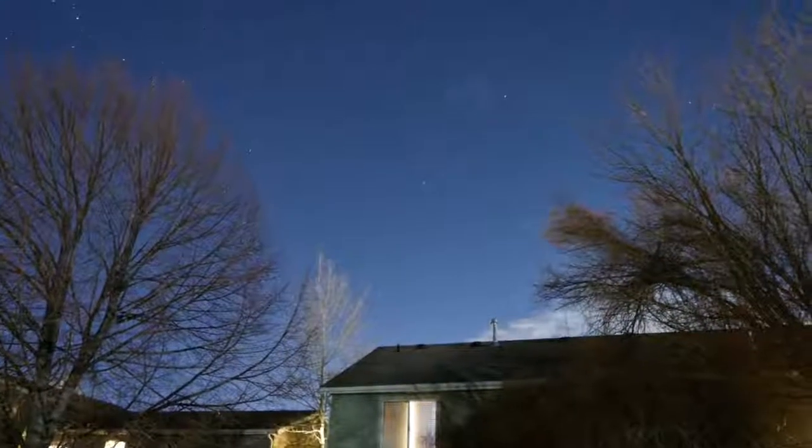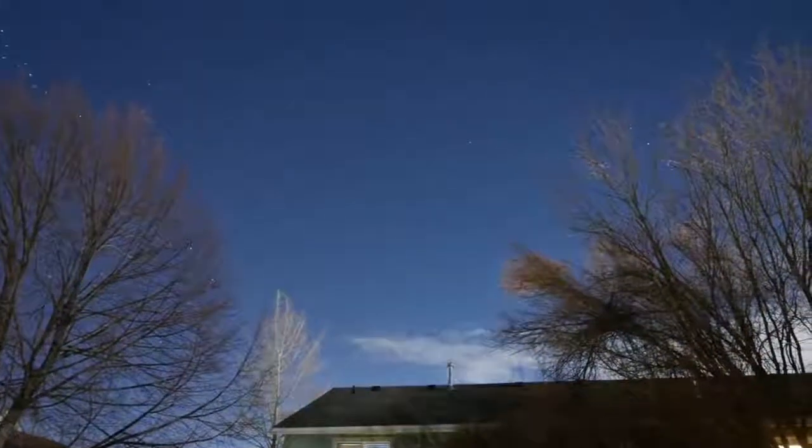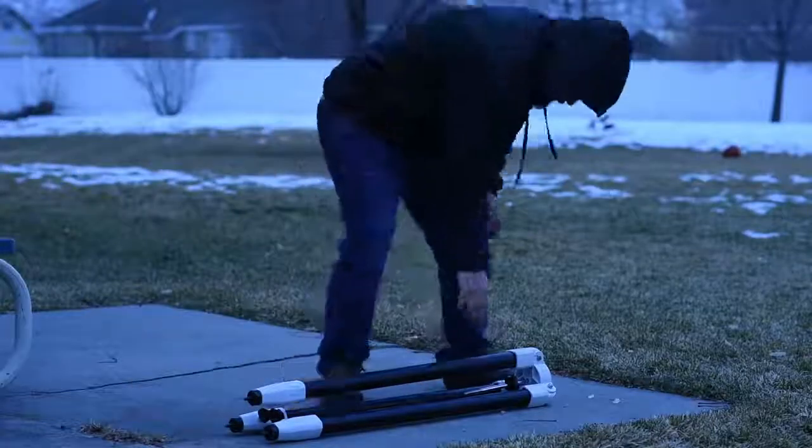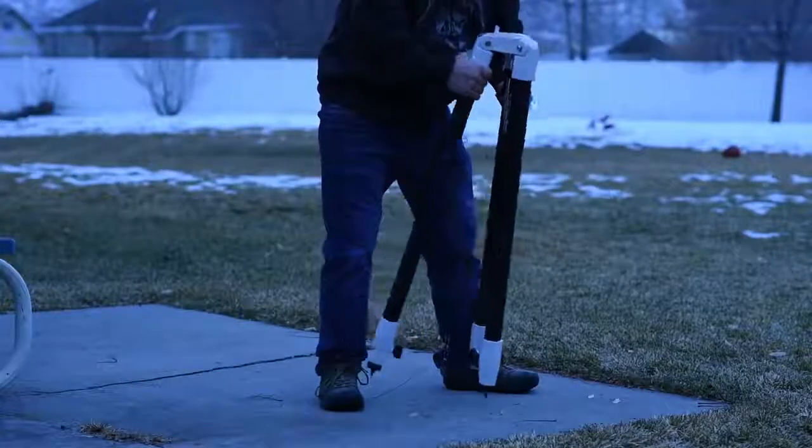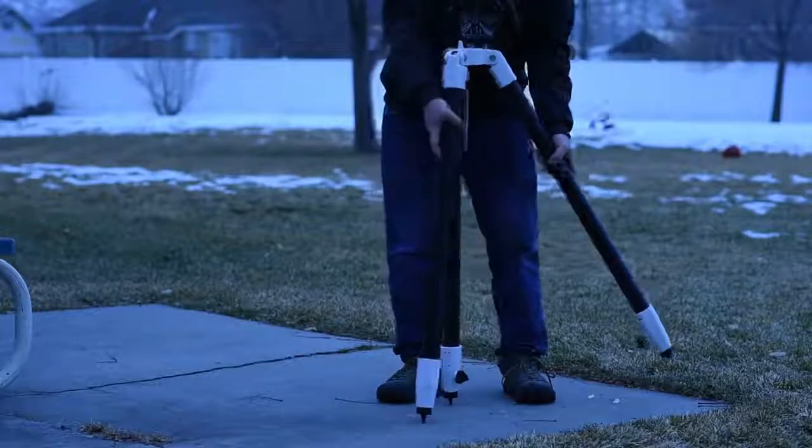When observing from the northern hemisphere, set up the telescope in a large dark open area where you can see lots of sky and where the north star, Polaris, is visible. Make sure the ground is stable and approximately level. Stand the tripod vertically with the tripod feet down and with the tripod still fully collapsed.